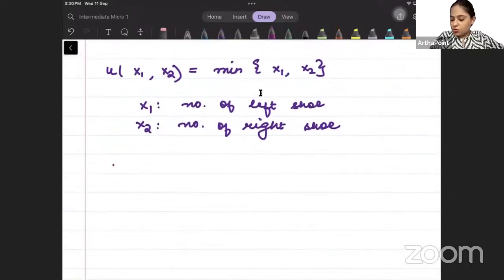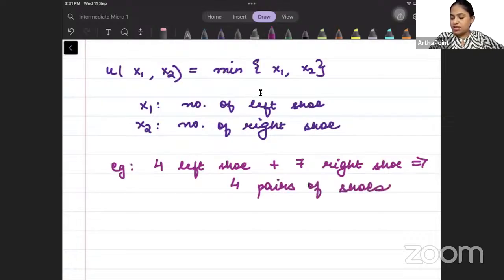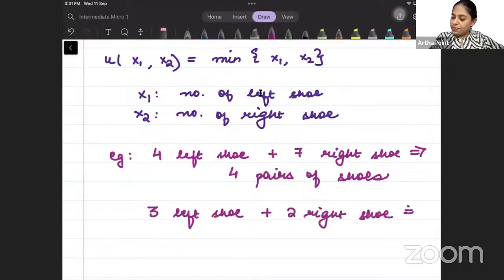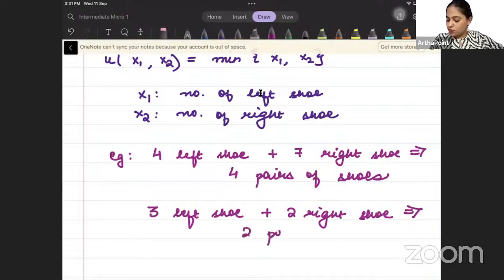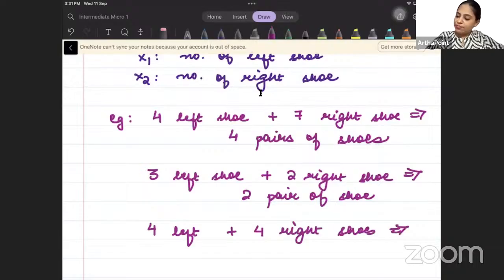Tell me something. 3 left shoe and 2 right shoe. How many pairs you will have? 2 pair of shoes. 1 extra left shoe is of no use to you. If I ask you, you have 4 left and 4 right shoes. Then, how many pairs of shoes you will have? 4 pairs of shoes.